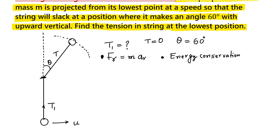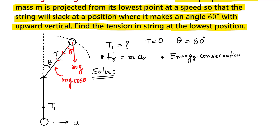Now let us solve this problem. We write the first equation using Newton's law. The forces acting are Mg downward and tension T along the string. Mg has a component Mg cosθ along the radial direction. So we write: T minus Mg cosθ = Mv²/L, where L is the length of the string and V is the velocity at that position.